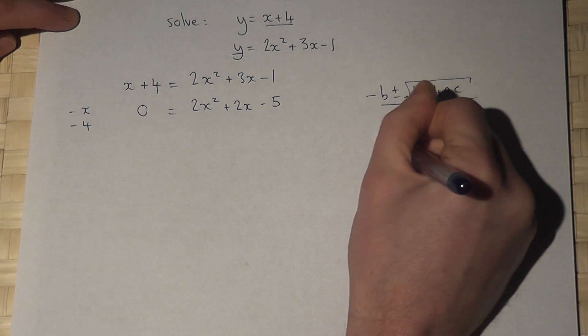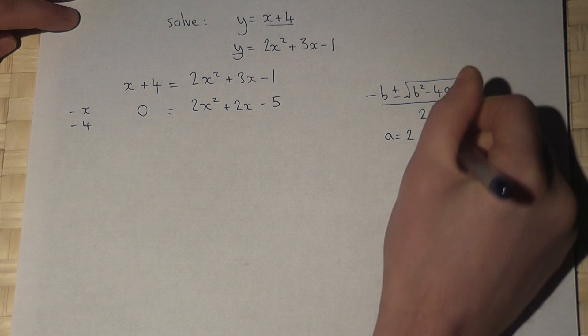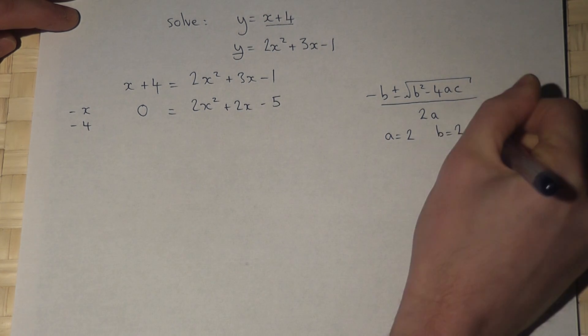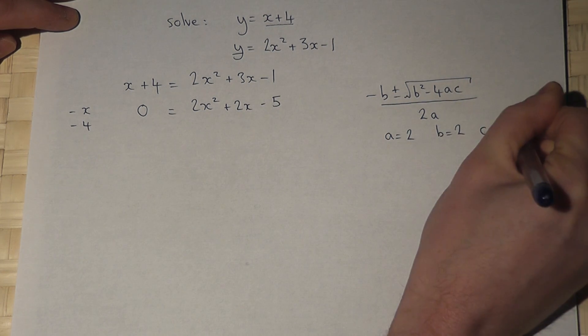Where a, in this case, is 2. b is also 2. And c is minus 5.